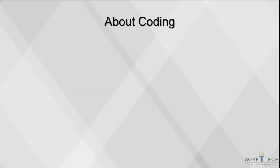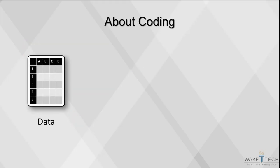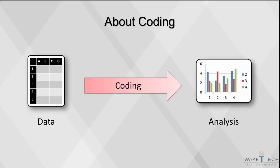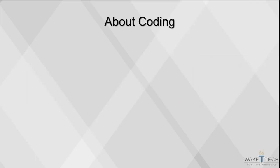Coding is the process of translating the information gathered from questionnaires and other investigations into something that can be analyzed, usually using a computer program. Coding involves assigning a value to the information given in a questionnaire, and often that value is given a label. Coding can make the data more consistent.